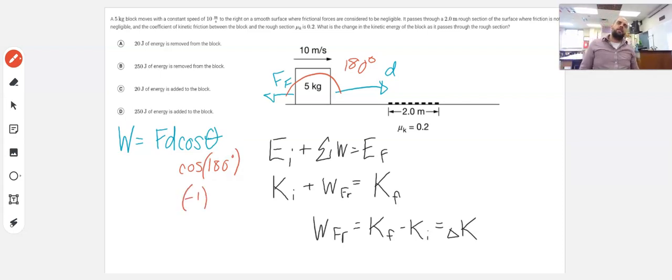And that makes sense that it would be negative 1, because friction is going to take energy away from our block. It takes kinetic energy away and turns it into heat energy along the surface. So I can immediately rule out options C and D—work is not going to add any energy to this.